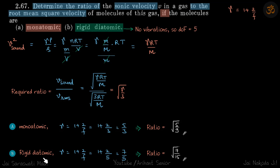And for rigid diatomic, the degrees of freedom are 5. So 3 are translational and 2 are rotational. Since it is rigid, there is no vibrational degrees of freedom. So gamma is 1 plus 2 by 5, which is 7 by 5, which gives our answer.